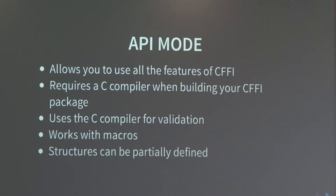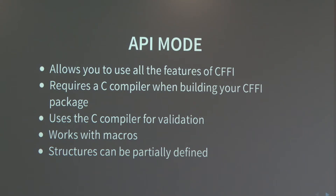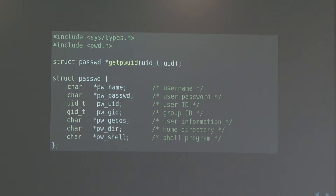A neat trick is that structures can be partially defined. Structures in C are basically like a basic object dictionary type of thing, but the documentation doesn't necessarily tell you all the fields. With ctypes or ABI mode you'd need to declare all of the fields, which is pretty annoying. With API mode, the compiler will just figure out all the fields — you just need to declare the types you want to use. Let's look at another function — it's simple: a function that returns user information on Unix systems. You give it a user ID, and it gives you back the username, password, all that stuff.